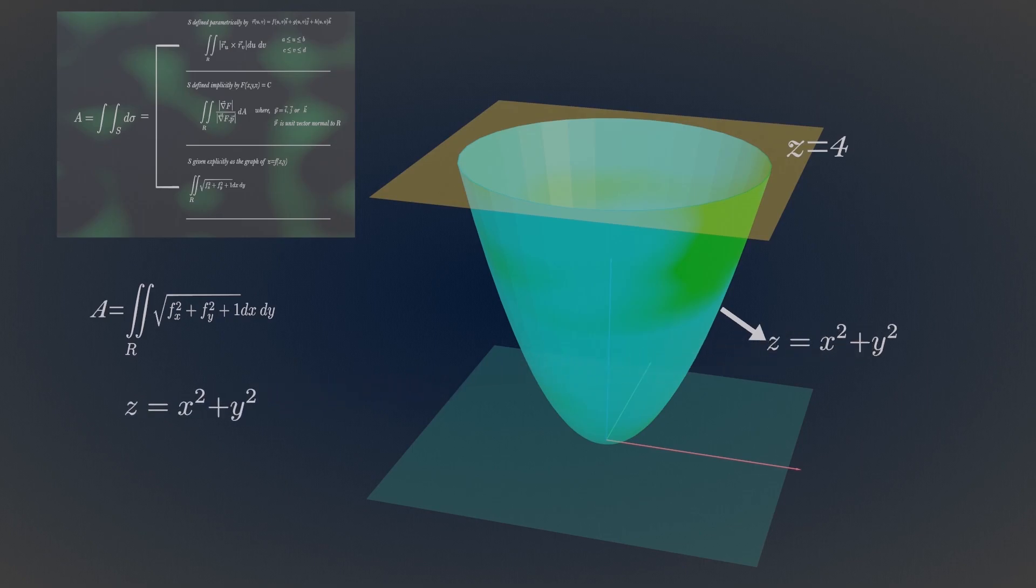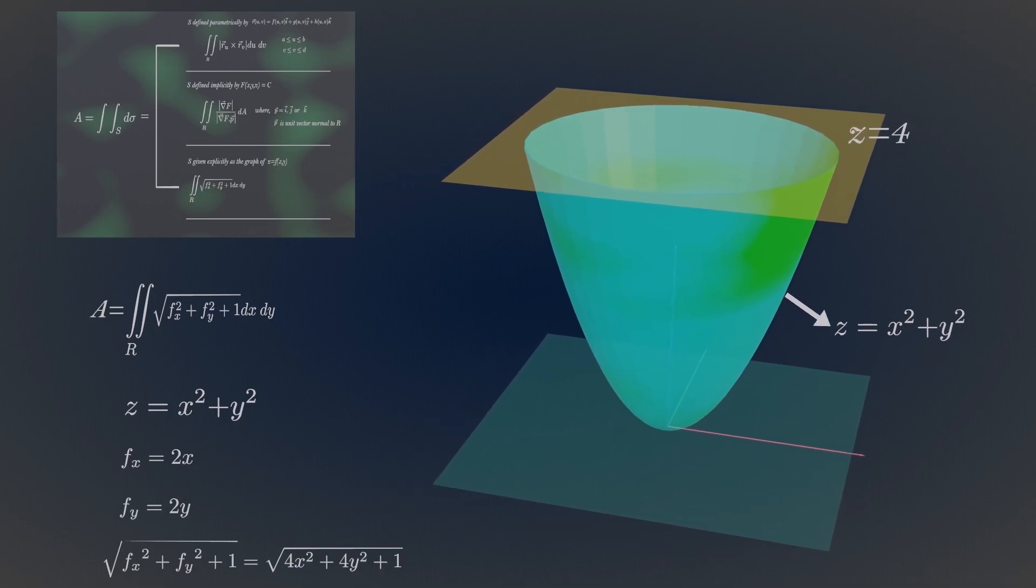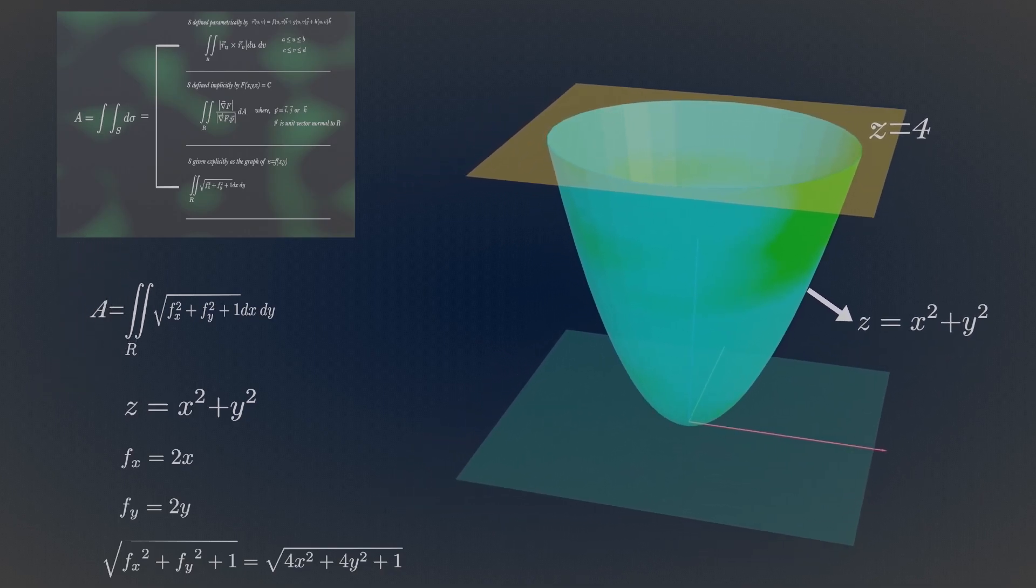Now partial differentiate this explicit function with respect to x, and then with respect to y. Then the surface area is given by this double integration.